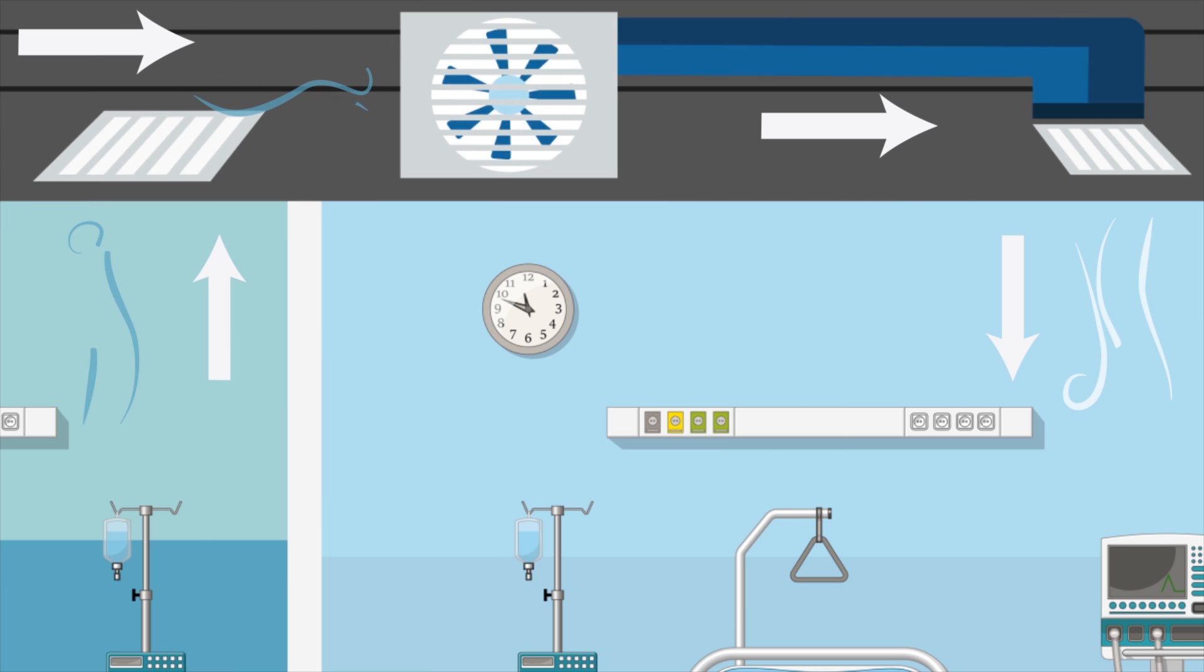Similarly, in the building, air is pulled out of all the rooms and into the ceiling plenum and then back to the air handling unit to be refiltered and distributed back to the rooms in the building.